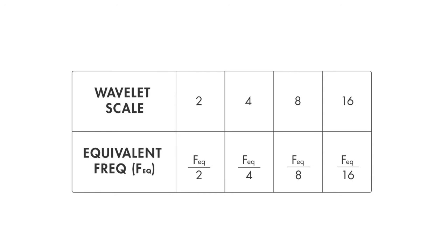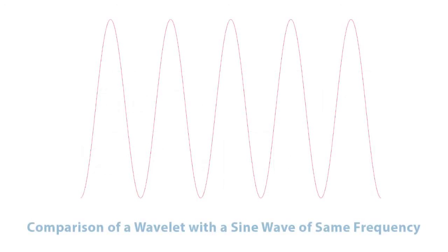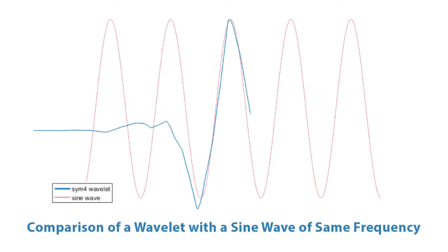Therefore, when you scale a wavelet by a factor of 2, it results in reducing the equivalent frequency by an octave. Here is how a SIM4 wavelet with center frequency of 0.07 Hz corresponds to a sine wave of the same frequency.